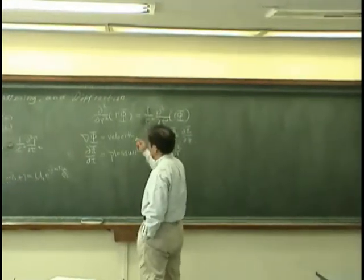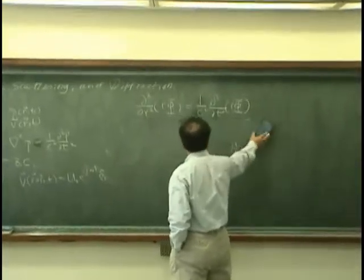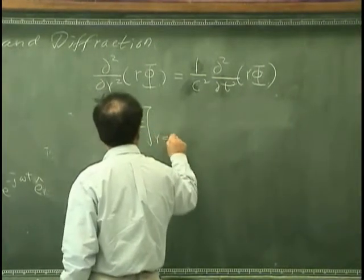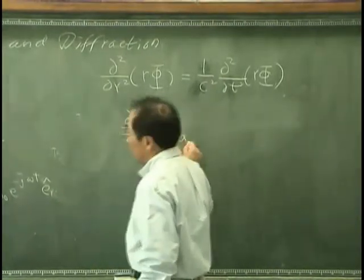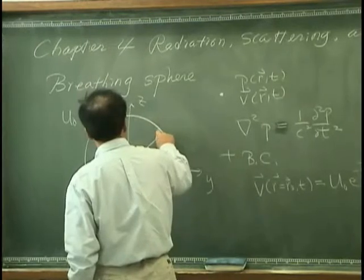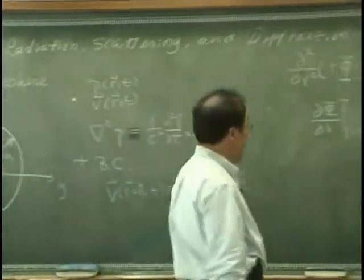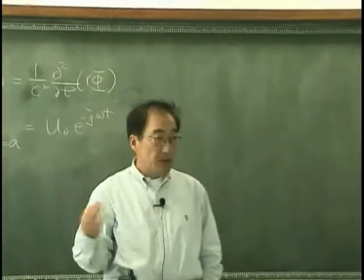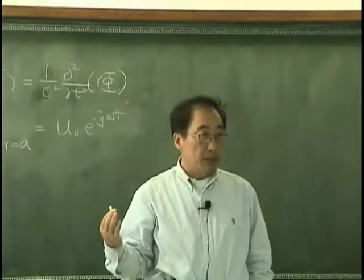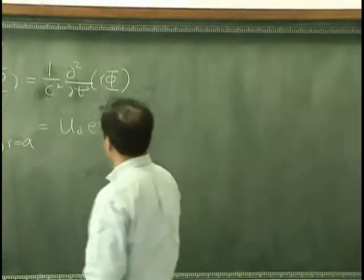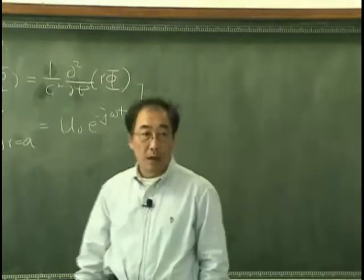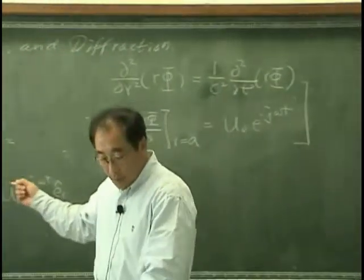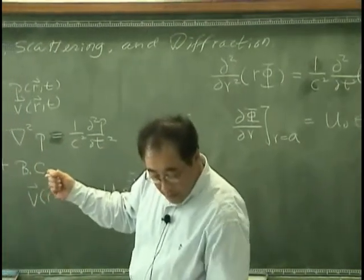And the boundary condition now can be written as, conveniently, d phi dr on r equal a, which means that this radius of this sphere is a, has to be u0 e to the minus j omega t. It's a very simple mathematical expression. Then our job is solve this equation, get the solution that satisfies this boundary condition.